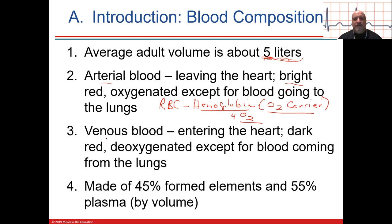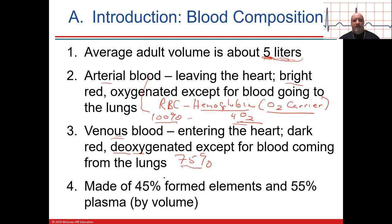Venous blood drains back to the heart and doesn't glow as red — there's less oxygenated blood there. It's not completely deoxygenated; it still has some oxygen. Up in the arteries, arterial blood should be 100% oxygen saturation of hemoglobin, while venous blood is around 75%. So at 100%, all four binding sites are bound; at 75% in the veins, three out of four are bound.